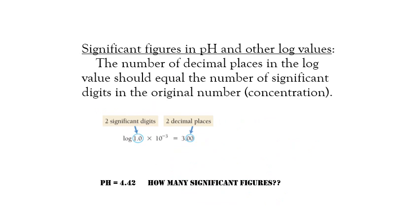When deciding how many significant digits to report in a pH answer, look at the decimal places after the decimal point in the pH value — those should match the number of significant figures in the given concentration. For example, if the pH is 4.42, it has 2 decimal places, so the concentration should have 2 significant figures. In other words, the number of decimal places in the log value must equal the number of significant figures in the original concentration.